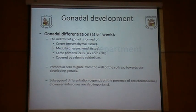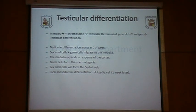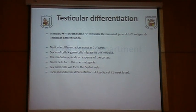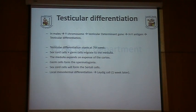Autosomes are also important. In males, the Y chromosome contains the testis-determining gene, which carries the HY antigen, and this is responsible for testicular differentiation. Testicular differentiation starts at seven weeks; the sex cords and germ cells migrate into the medulla, the medulla expands at the expense of the cortex. The germ cells transform into spermatogonia, the sex cord cells form Sertoli cells, and mesodermal cells form Leydig cells. The Sertoli cells produce anti-Müllerian hormone and the Leydig cells produce testosterone.